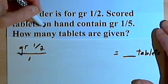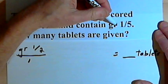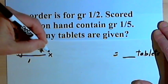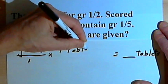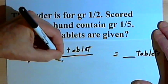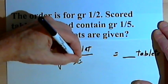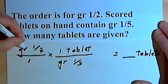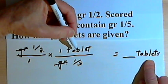And we're told that the tablets are scored and they contain one-fifth of a grain. So I'm going to take my first fraction and multiply it by the fraction one tablet over one-fifth of a grain. Well, I can cancel out the grains, that'll be nice,